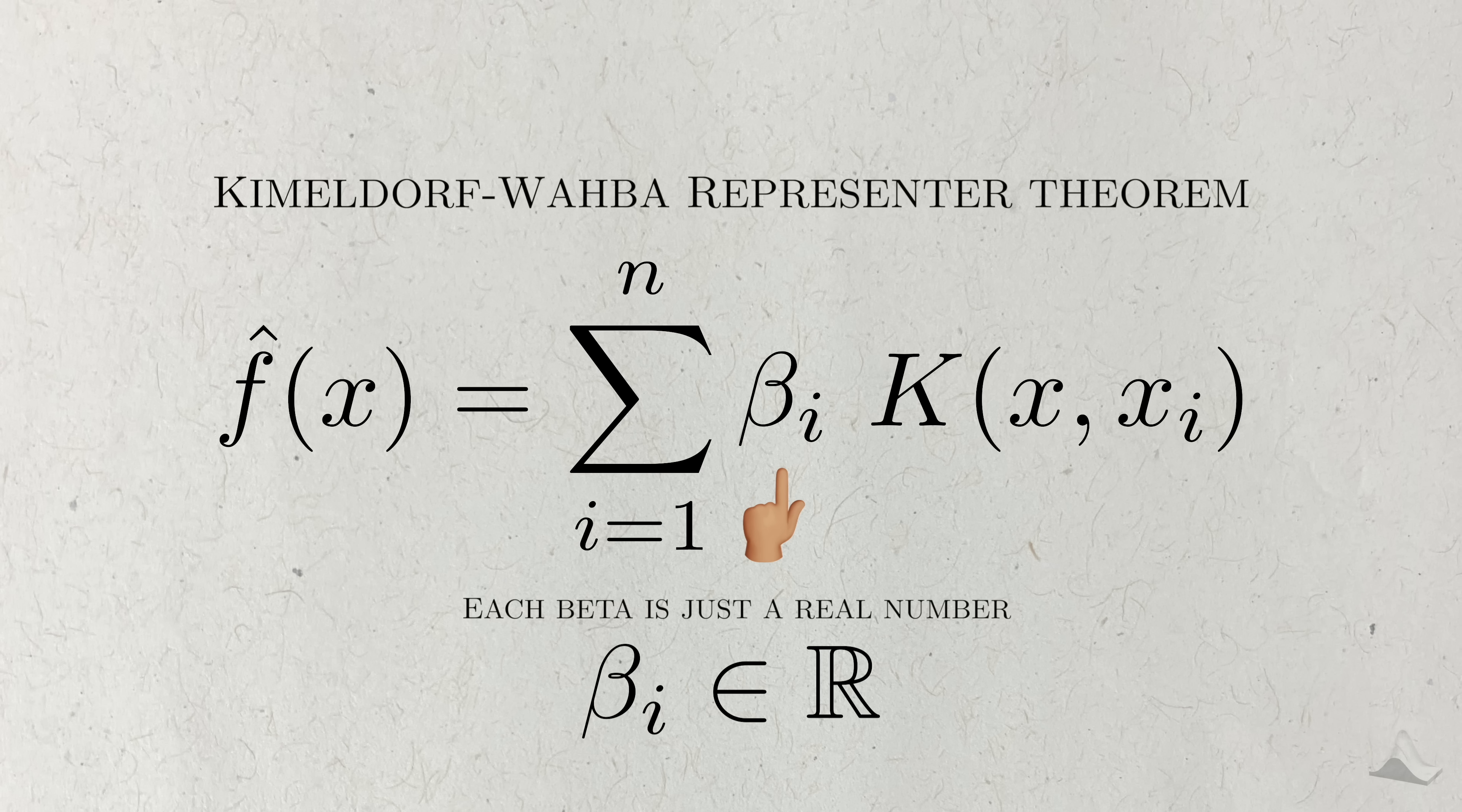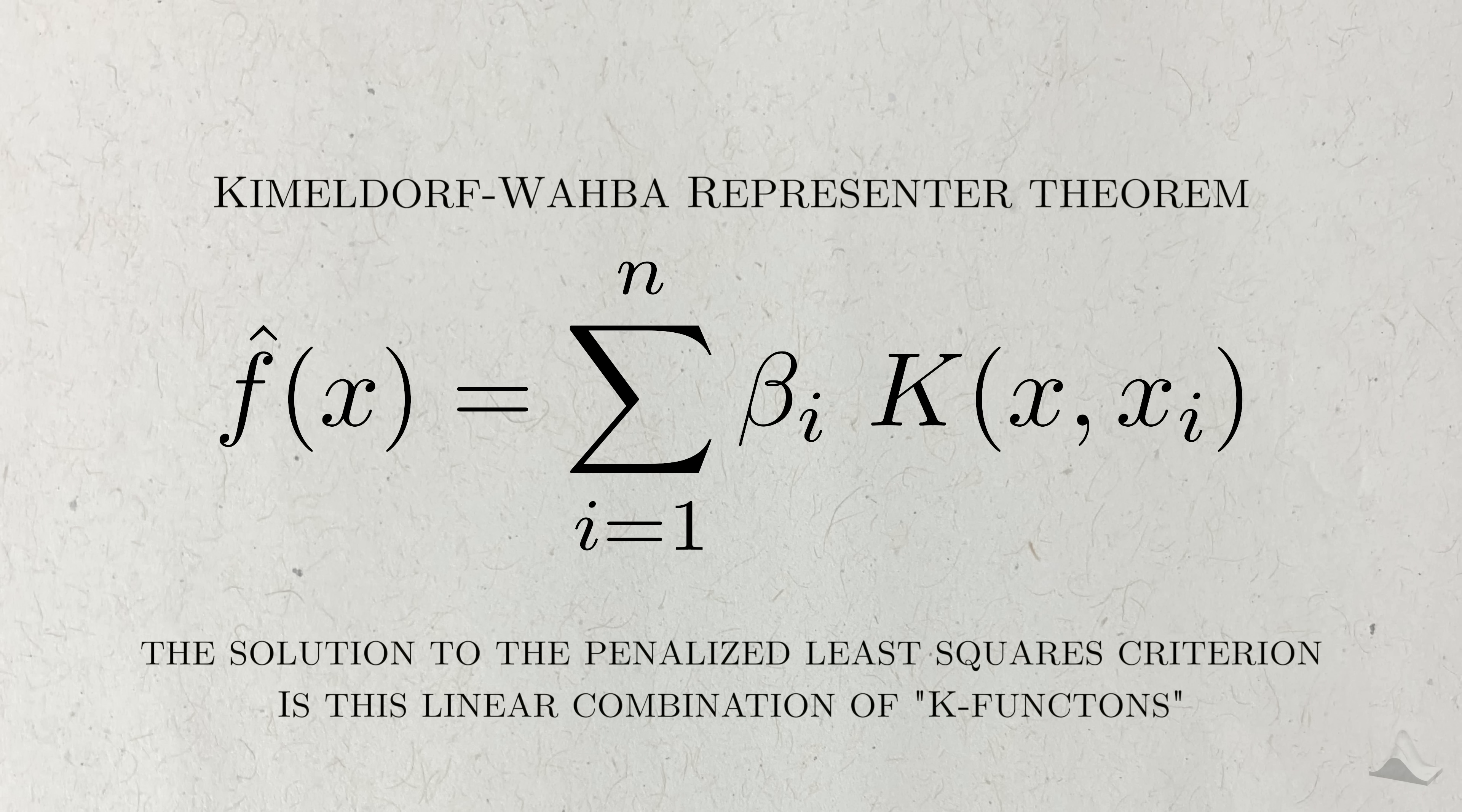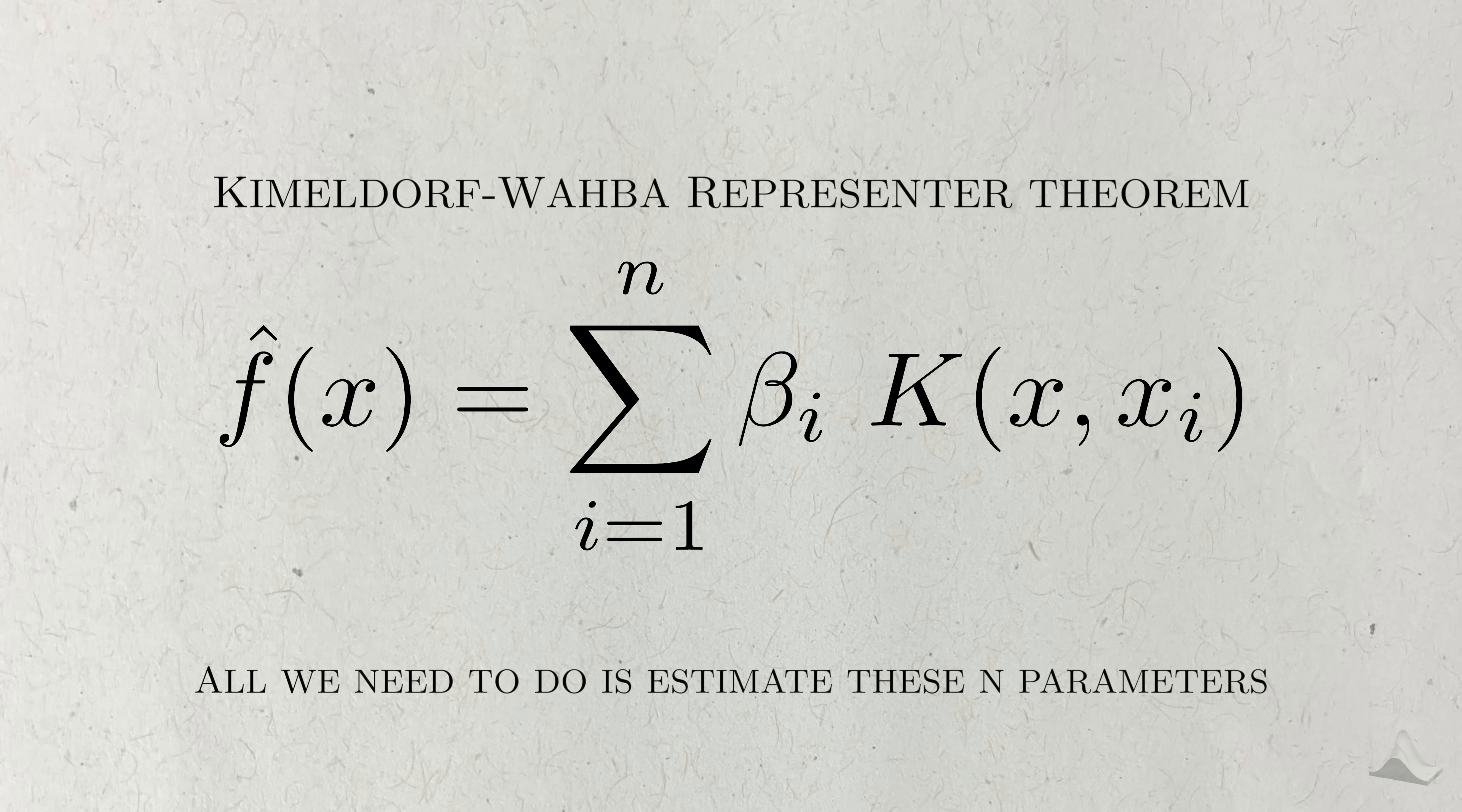Here, these betas are just numbers. They are coefficients just like the coefficients in a linear regression. But this time, there are n of these coefficients, one for each observation we made. But instead of the predictors themselves being used, they're put inside a special function which I've denoted as capital K. So, according to Kimeldorf and Wahba, the function that minimizes the penalized least squares is a linear combination of these K functions. Instead of needing to estimate infinitely many points to get the function we want, all we need to do is estimate n parameters. This representer theorem turns an impossible, infinite problem into an easy, finite problem.